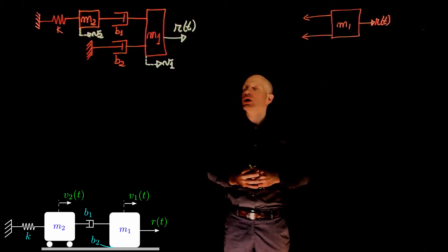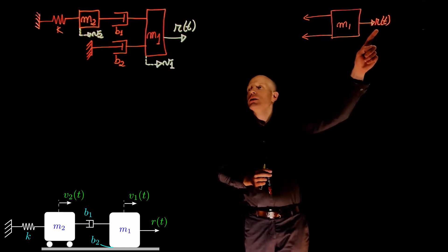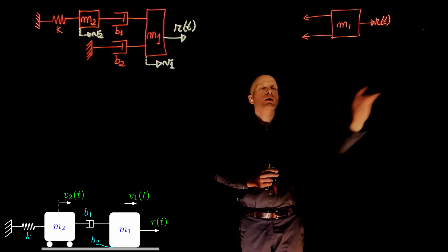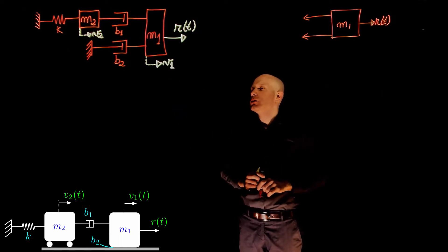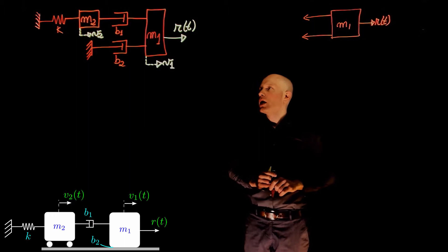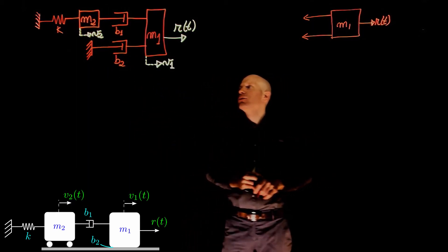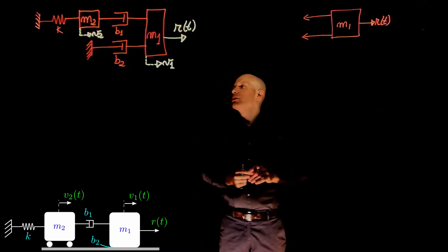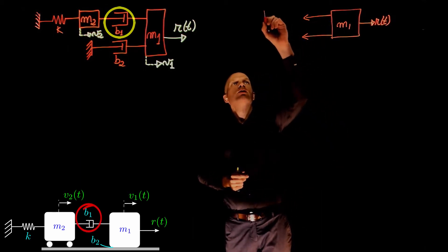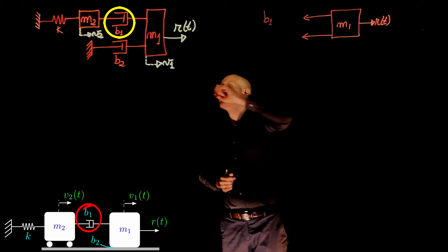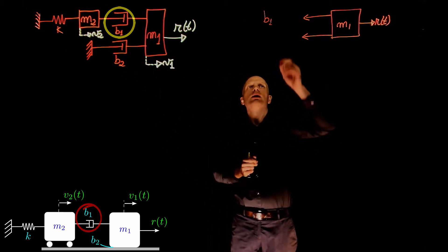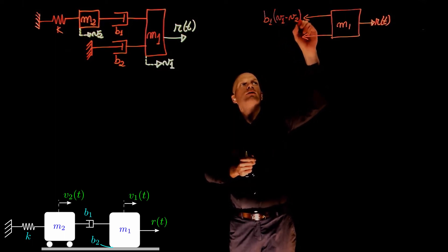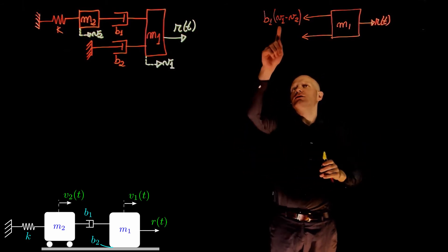Let's start with mass m1. Here is the free body diagram of mass m1. The input force is r(t) and we have two forces resisting motion, assuming that mass m1 moves to the right with speed v1. Let's call the speed of mass m2 as v2. As the mass moves to the right, the first resistive force is b1 — the viscous friction coefficient of that damper — multiplied by the relative velocity across its ends, which is v1 minus v2.